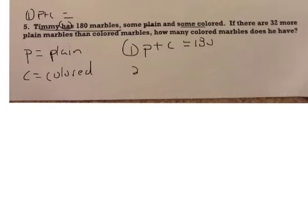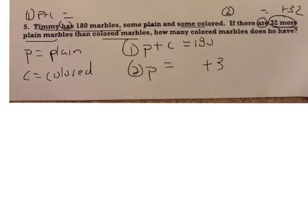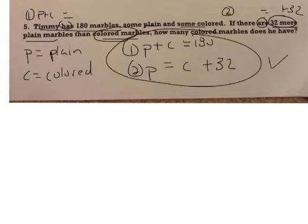The second one here is one of those comparison statements, and those are the ones that are a little bit tricky. It says 32 more plain than colored. You have to figure out which one is the bigger quantity. It tells you 32 more plain, so plain is bigger. 32 more means plus 32, so we skip a space, plus 32 to the colored. So that is your answer.